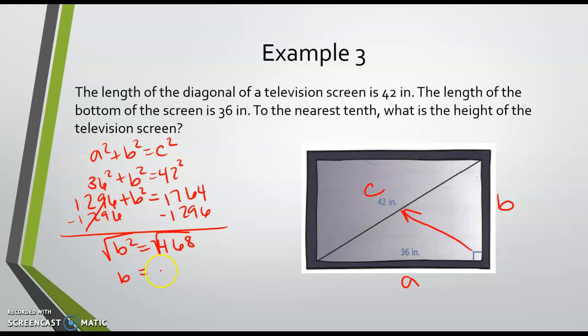The square root of 468, as I type it into the calculator, is 21.6. So the height of our TV is 21.6 inches, and I remember I rounded to that 0.6.